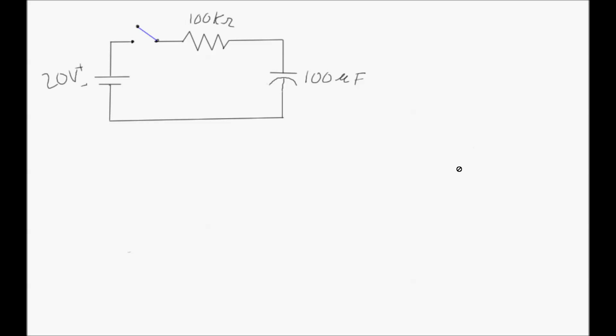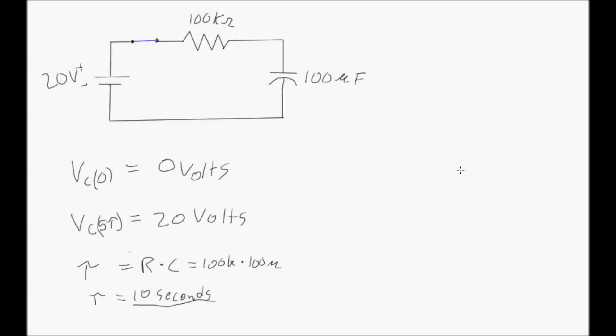From the last video we saw that at the instant the switch is closed, the voltage drop across the capacitor is zero volts — it acts as a short circuit. After the five time constants have expired, the capacitor is said to be fully charged at a voltage equal to the power supply, in this case 20 volts.